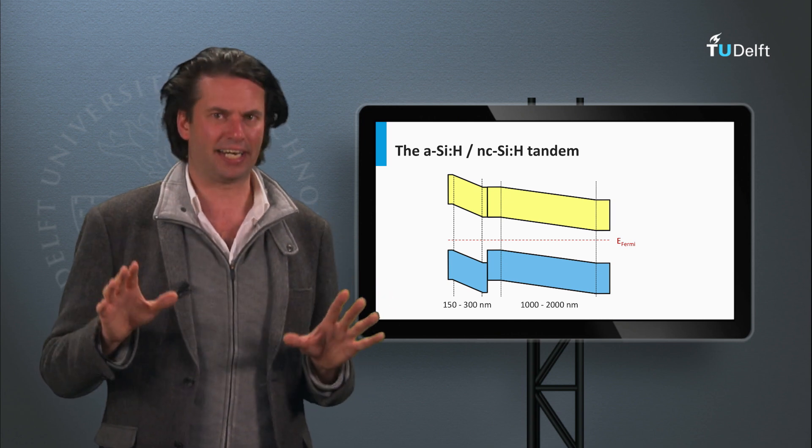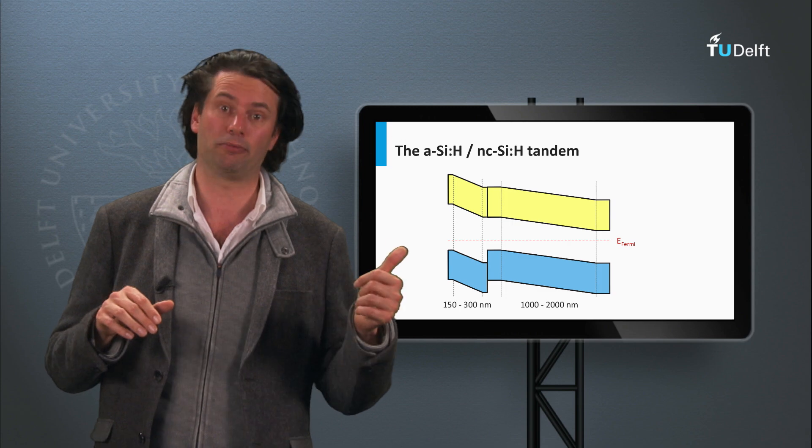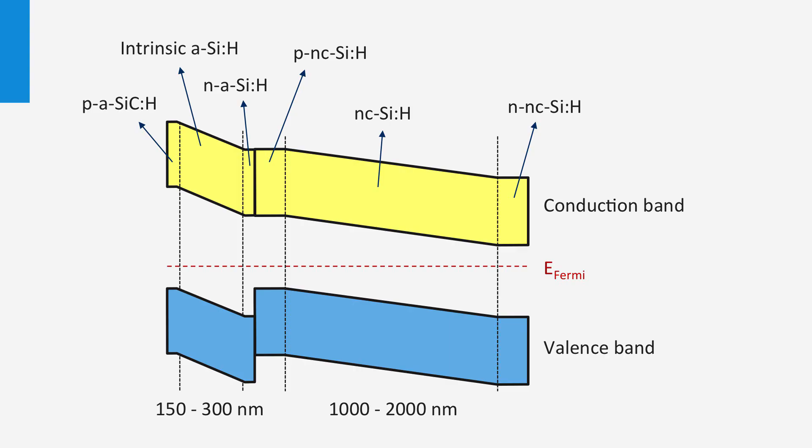Let's look at a typical band diagram of such a double junction, or also referred to as a tandem cell. On the left, the electronic band diagram of the amorphous silicon top cell is shown, and on the right, the electronic band diagram of nanocrystalline silicon bottom cell is shown.